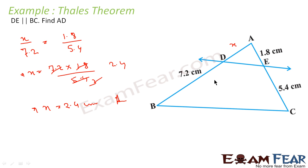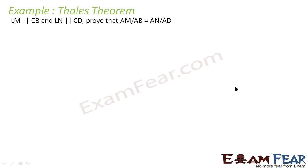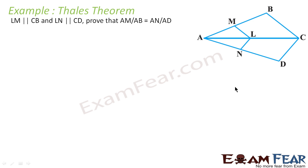Very simple — we have this triangle where LM is parallel to CB. We apply the theorem. We will take one more example: LM is parallel to CB, and we have to prove that AM by MB is equal to AN by ND.